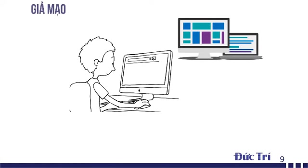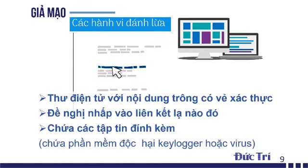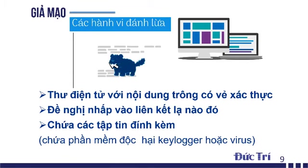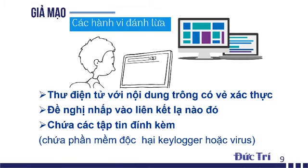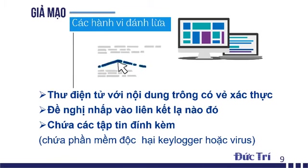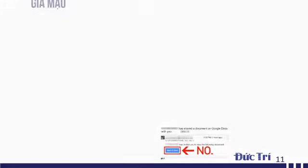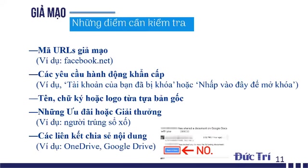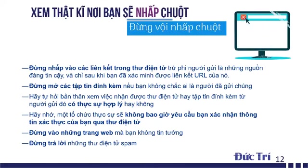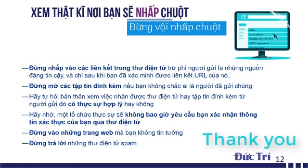Trên Internet còn vô vàn những hành vi giả mạo đáng ngờ khác, ví dụ như thư điện tử chứa nội dung trông có vẻ xác thật, đề nghị nhấp vào link lạ nào đó hoặc chứa các tập tin đính kèm. Chúng ta đừng vội, hãy kiểm tra thật kỹ nơi mình sẽ nhấp chuột vào, đặc biệt là khi cài đặt chương trình và khi xem các đường link lạ.